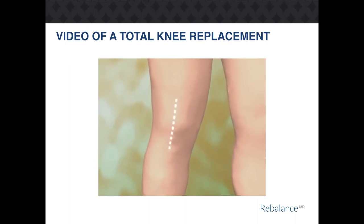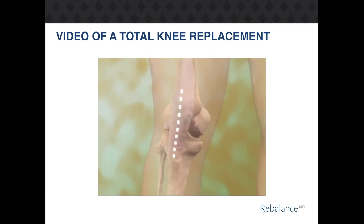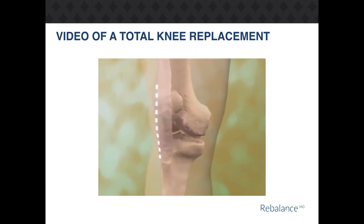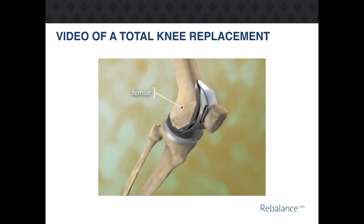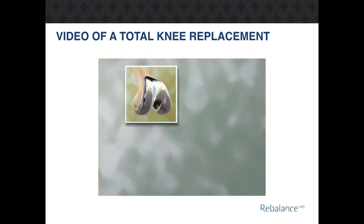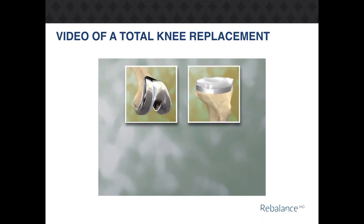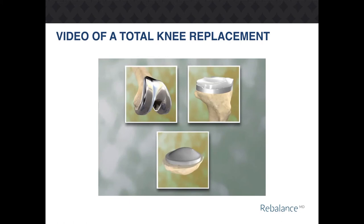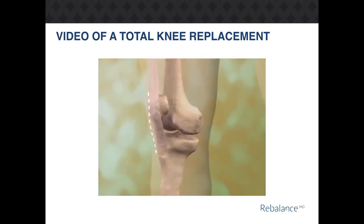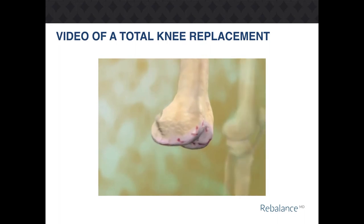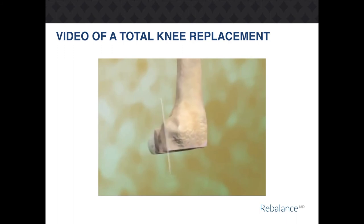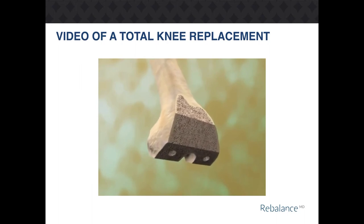Total knee arthroplasty, or replacement, is a surgical procedure in which a diseased or damaged knee joint is replaced with an artificial joint. Your knee is made up of the lower end of your thighbone or femur, the upper end of the shinbone or tibia, and the kneecap or patella. Most replacement joints consist of a metal femoral component, a plastic tibial component held in a metal tray, and a plastic patellar component. The procedure begins with an incision on the front of the knee, and the kneecap is moved to the side. Damaged bone and cartilage at the end of the femur are cut away, and the bone is measured and cut to fit the femoral component, which is then attached.